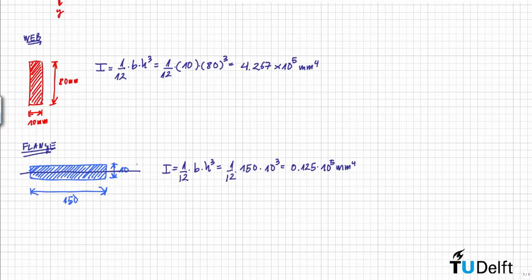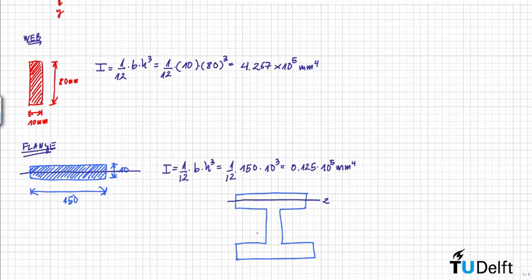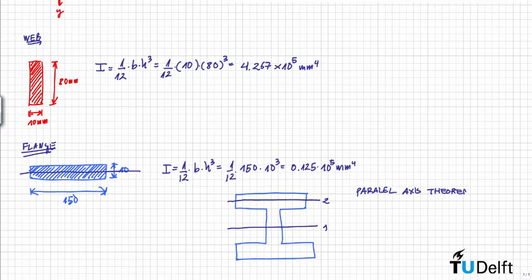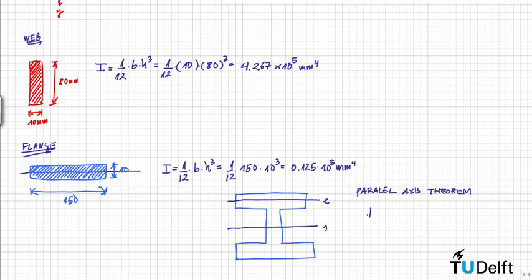Remember that we do not want to calculate the moment of inertia with respect to the flange's own axis, but with respect to the global Z axis of the problem. Then we use the parallel axis theorem. This theorem says we can translate the moment of inertia of a section from one axis to another parallel axis. The moment of inertia with respect to the global axis equals the moment of inertia with respect to the local axis plus A times D squared.